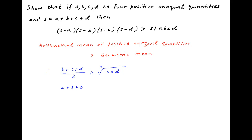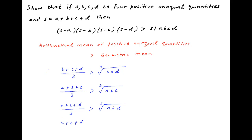Similarly, (a + b + c) / 3 is strictly greater than the cube root of abc. Also, (a + b + d) / 3 is strictly greater than the cube root of abd. And finally, (a + c + d) / 3 is strictly greater than the cube root of acd.